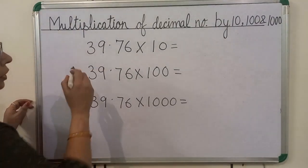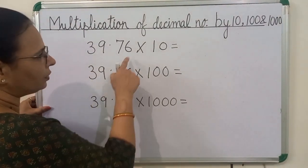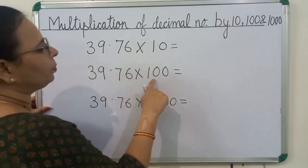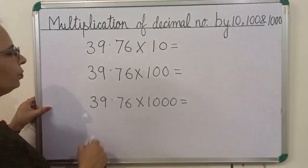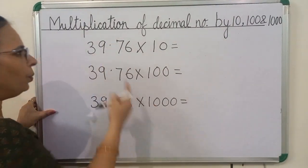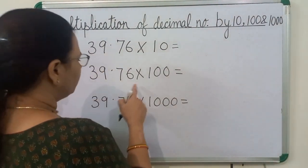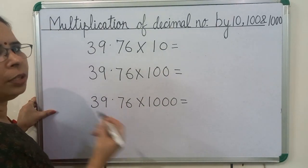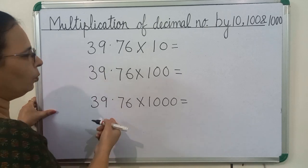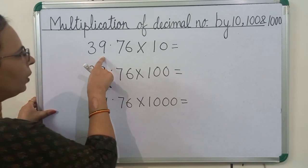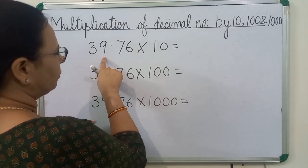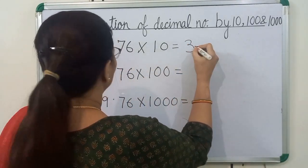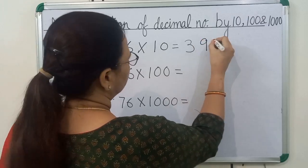We will multiply 39.76 by 10. This same number we will also multiply by 100 and 1000. When we multiply a decimal number by 10, 100, or 1000, for some time we will ignore the decimal point. We will multiply 3976 by 1, and we will get 3976.